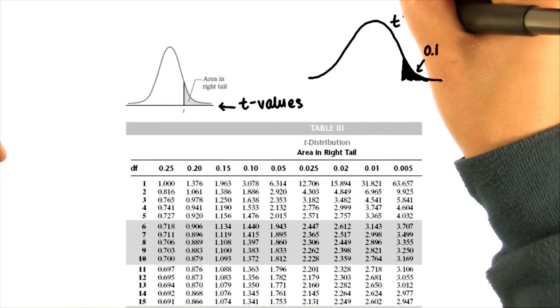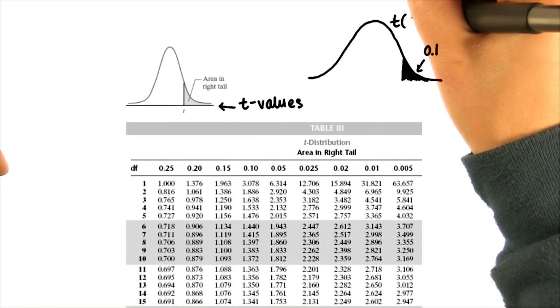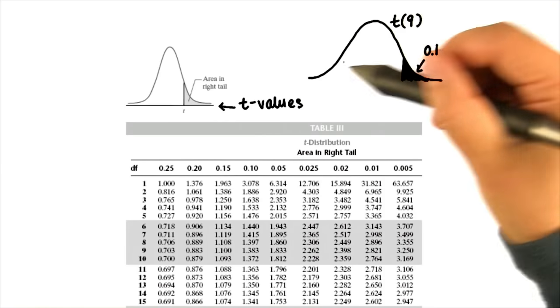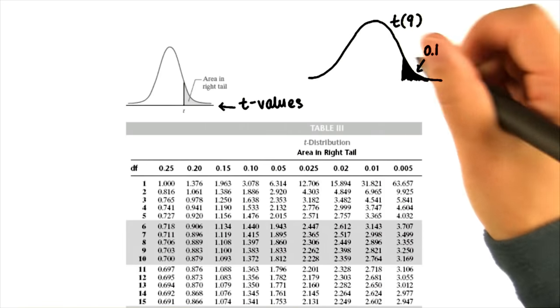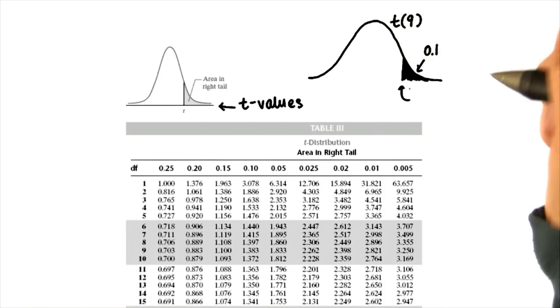And let's say that our sample size is 10, so our degrees of freedom is 9. So this is a t distribution with 9 degrees of freedom, and we want to find this t critical value.